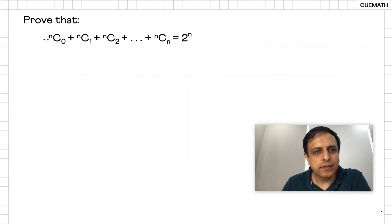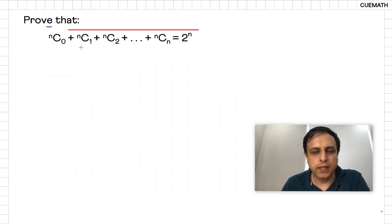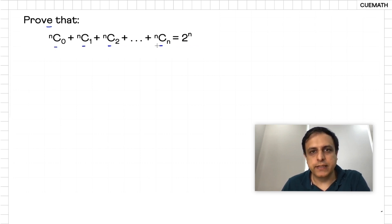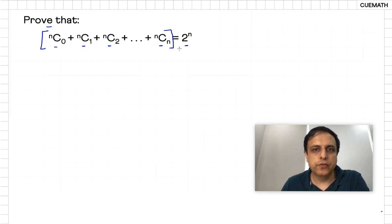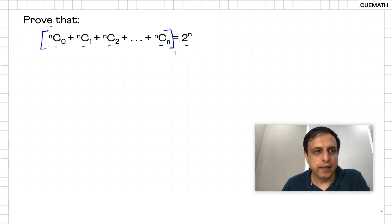In this video, I'm going to discuss a beautiful and elegant way to prove this combinatorial identity. It says NC0 plus NC1 plus NC2 all the way up to NCN is equal to 2 to the power N. So the left side is the sum of all the binomial coefficients from NC0 all the way up to NCN, and on the right side we have 2 to the power N, and we have to prove this identity.